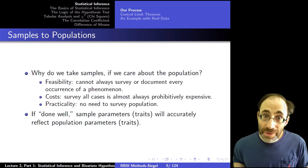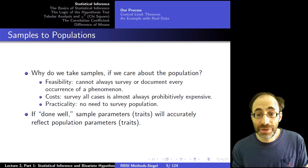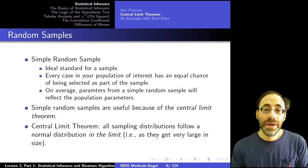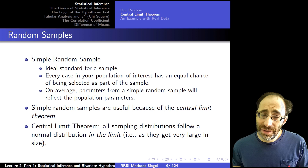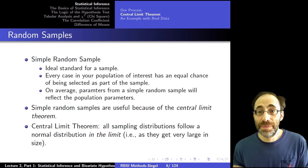If we do a good job with that, then the sample parameters — the traits of the sample — will accurately reflect the population parameters, the traits of the population. As for how to sample, there are many different ways. We'll focus on the ideal in many cases, which is simple random sampling: you have a whole population and you choose a sample completely at random, so every member of your population has an equal chance of ending up in your sample.